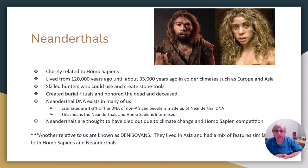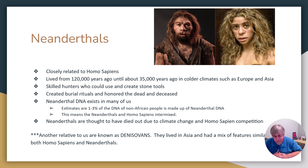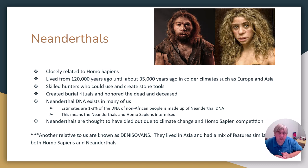Our closest non-Homo sapien relative is the Neanderthal. They lived from about 120,000 years ago up to around 35,000 years ago and lived in the colder climates of Europe. We are constantly learning more about them, and it turns out that if you are of non-African descent — meaning European or Asian descent — it's very likely you have somewhere around three to five percent Neanderthal DNA. What that tells us is that Neanderthals lived alongside Homo sapiens, had children with them, and live on through us.